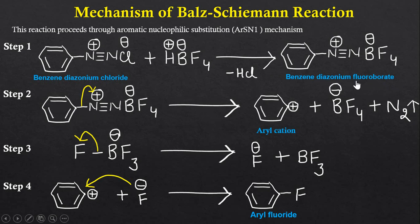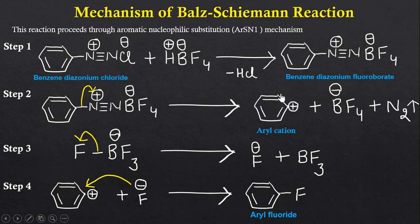In step 2, the C–N bond in benzene diazonium fluoroborate is cleaved. Because nitrogen is positively charged and has higher electronegativity than carbon, the bond breaks and the shared electrons are taken by the positively charged nitrogen. This gives carbon a positive charge, forming what is called an aryl cation. N2 gas and BF4⁻ are also released.